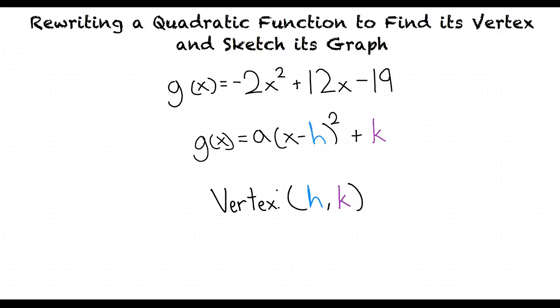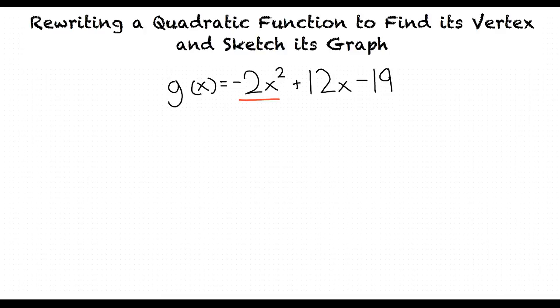How will we get our equation into this form? For our first step, we're going to factor out a negative 2 from our terms negative 2x squared and 12x. This results in g of x equals negative 2 times x squared minus 6x minus 19.